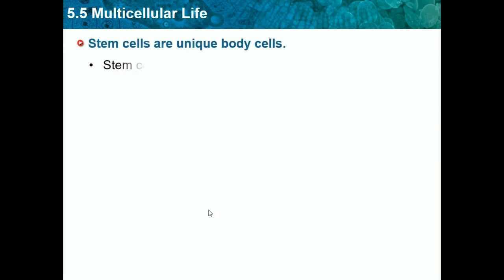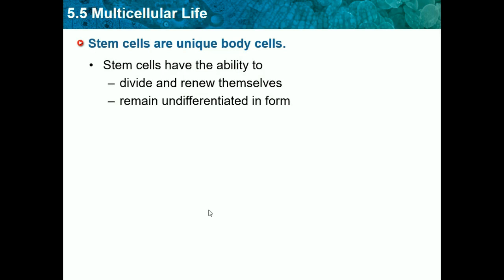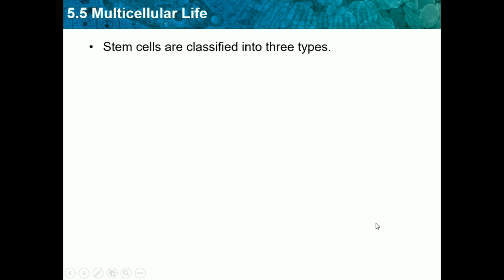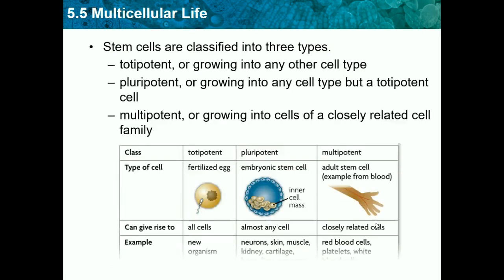Stem cells are unique body cells. They have the ability to divide and renew themselves, remain undifferentiated in form, and develop into a variety of specialized cell types. Basically, a stem cell is what we find in embryos — they are the very beginning and they choose what they become. A stem cell can become a skin cell, a heart cell, or a blood cell. A stem cell can either become two new stem cells, or one new stem cell plus a specialized cell like a heart or blood cell.